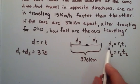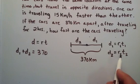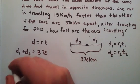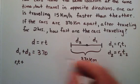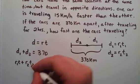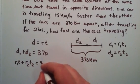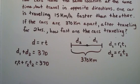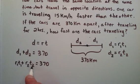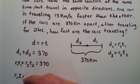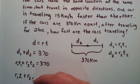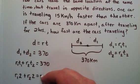Now we can replace d1 and d2 with r1 t1 and r2 t2. So d1 equals r1 t1 plus d2 which equals r2 t2, and that equals 370. We're dealing with a time of two hours, so t1 and t2 are going to be equal to two hours each. We can rewrite this as r1 times 2 plus r2 times 2 equals 370.